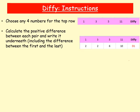So our row is going to look like this now — this is our new table. We found our differences: we've got 2, 2, 6, and 10. This D1 means Difference 1. So this is our first difference row, where we've taken away the numbers from the top row from each other. D1 just means Diffy 1.